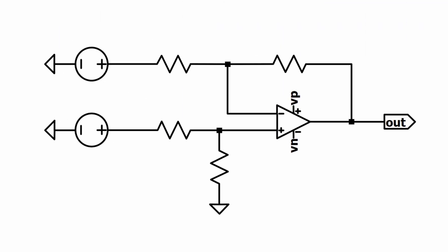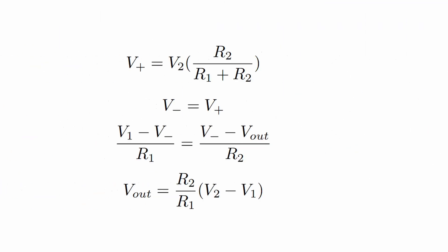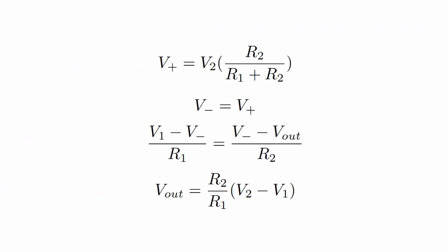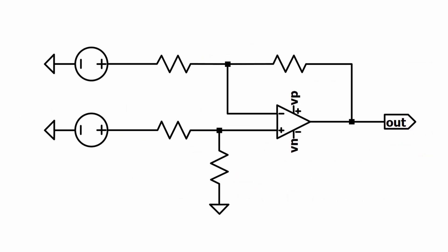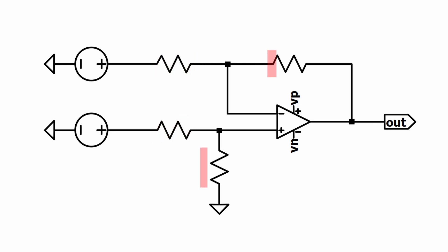That pretty much sums it up. Remember that using the formulas from earlier will allow you to find V out for any combination of resistors. For this particular video, I made the resistors on the left the same and the resistors on the right the same, because this is a common configuration.